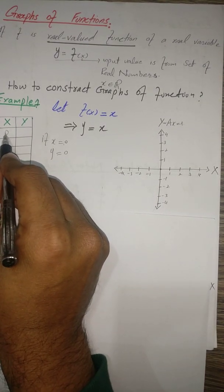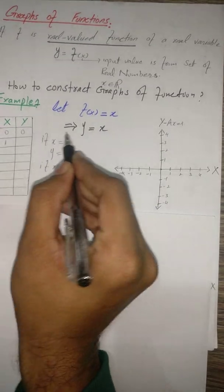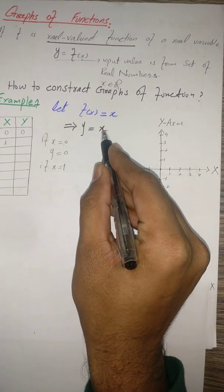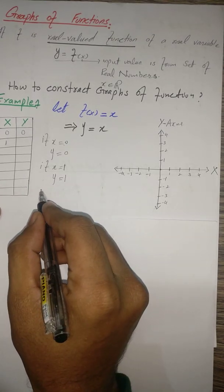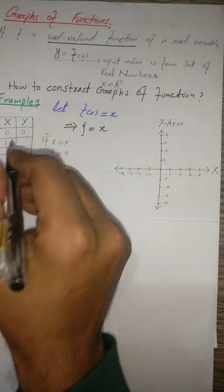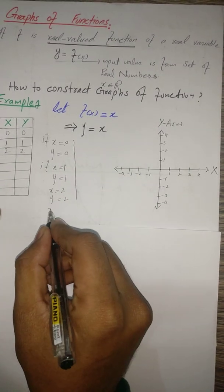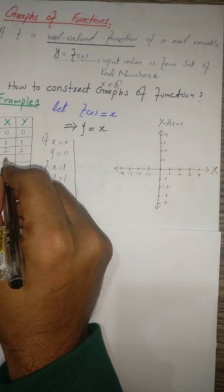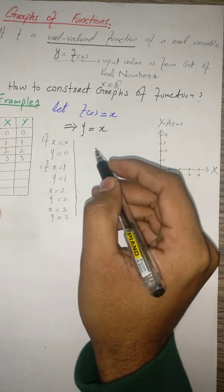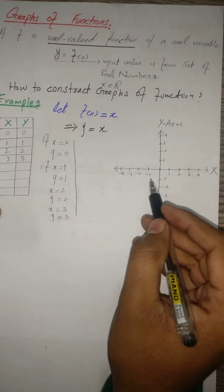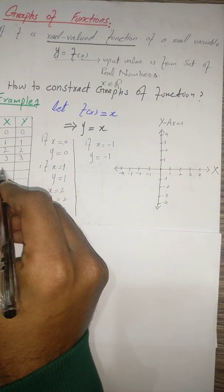We can make a table: if x = 0, our output y = 0. If x = 1, our output y = 1. Similarly, when x = 2, output y = 2. When x = 3, output y = 3. Since the real number set also includes negative numbers, we put x = -1, and y = -1.